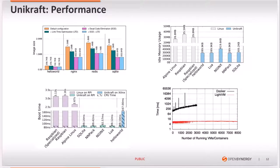Let's have a look at Unikraft's performance. The graphs come originally from the Unikraft project. The first graph shows comparisons of image size of common applications built as Unikernels with Unikraft. The resulting images are very small, with total image size ranging from a few hundred kilobytes up to less than 2 megabytes, and with additional optimizations we can achieve even smaller images.